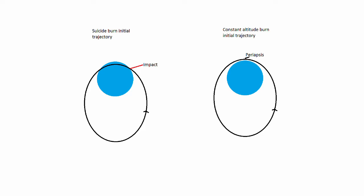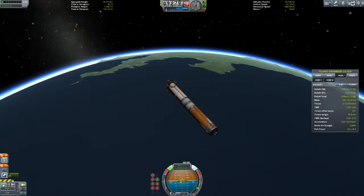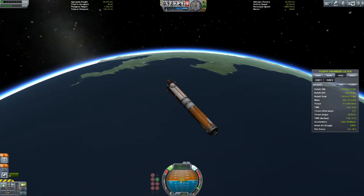The alternative to this is a constant altitude burn. This is where you keep a fixed periapsis above the surface. When the fixed height is set to zero, the constant altitude burn and suicide burn are exactly the same thing, and this is maximally efficient, assuming that there isn't an atmosphere.